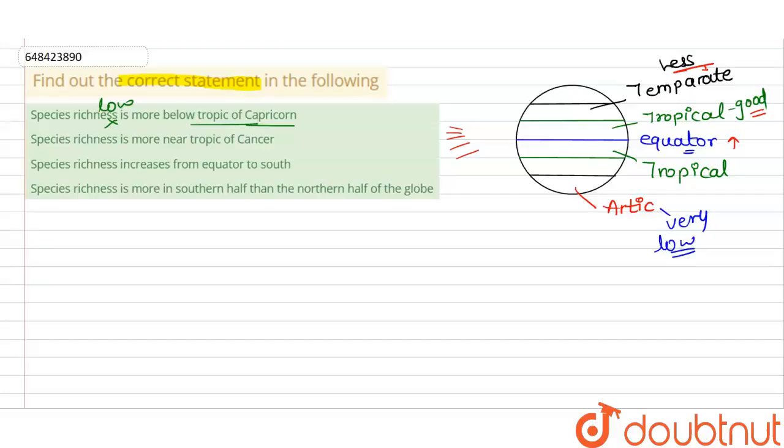Option two states that species richness is more near the Tropic of Cancer. Yes — the Tropic of Cancer falls in the tropical region, and as we explained, species richness is very good there. So this statement is true.